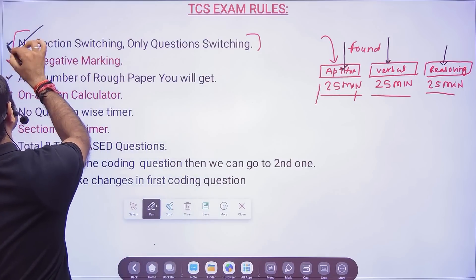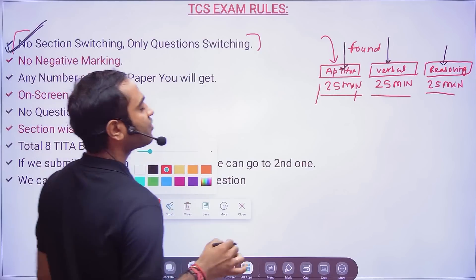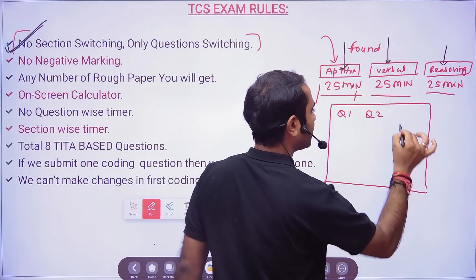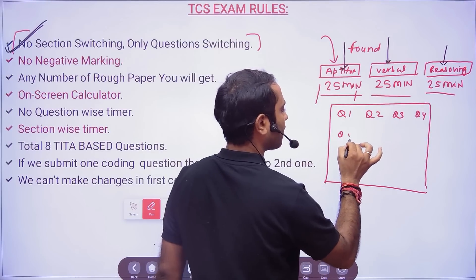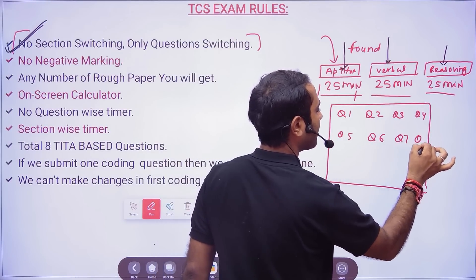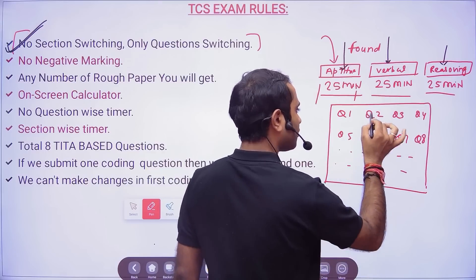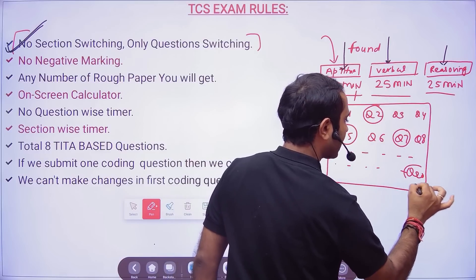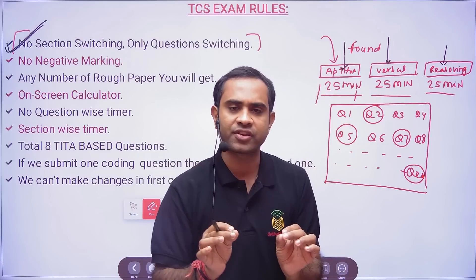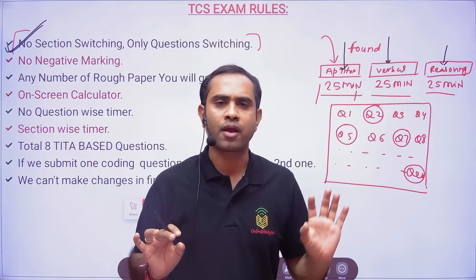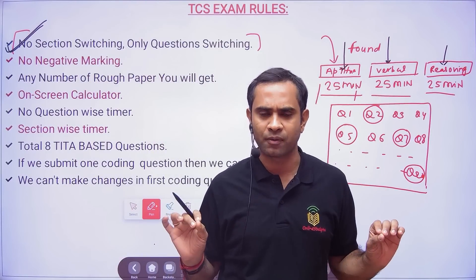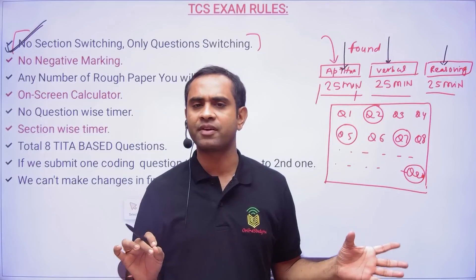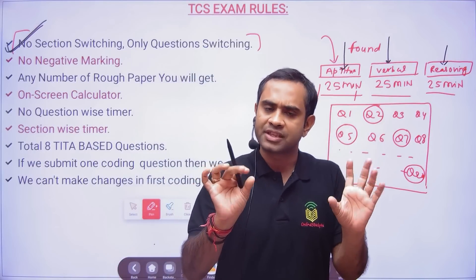Question switching, however, is allowed. Within a section, there will be a box showing question numbers — question 1, 2, 3, 4, 5, 6, and so on — and you can switch between them. This helps you solve questions on topics where you have more control, such as time and work, time and distance, or simplification. You can select and solve the questions you are most comfortable with accordingly.